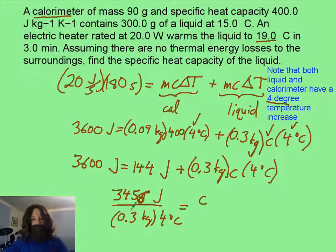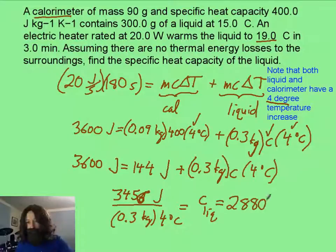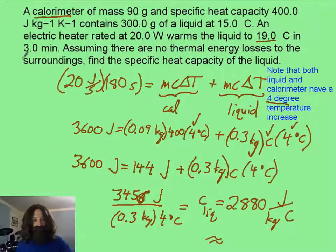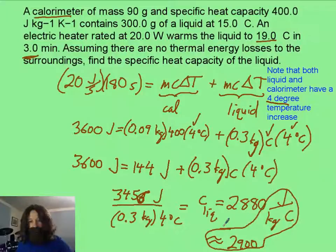Hopefully, you've got this far, and I've rearranged to solve for the specific heat capacity of the liquid. And that is going to be about 2,880. The units should be joules per kilogram per degree Celsius or Kelvin. Doesn't matter. Maybe we should just use two significant figures because that's three minutes, and we'll round that to about 2,900 as my answer with these same units.